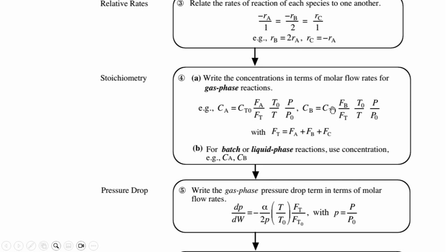In the same way we write for species B and C, and the total flow rate is FA + FB + FC. For batch or liquid phase reactions we use the concentrations, examples given CA and CB, which we will study once we proceed in this chapter.